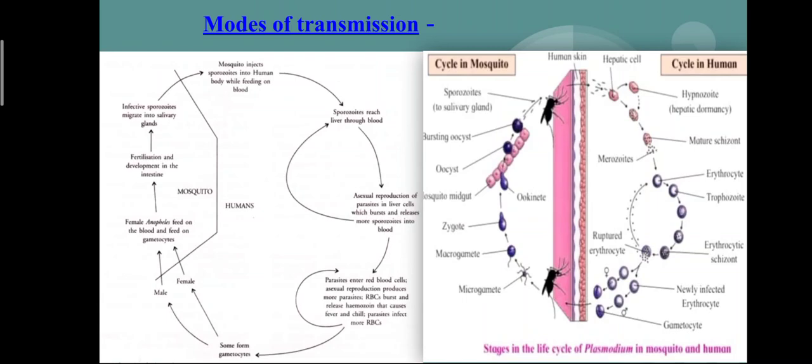Plasmodium is transmitted from one person to another through an insect vector — that means a mediator — which is nothing but the female Anopheles mosquito.